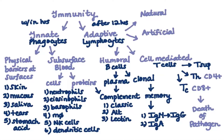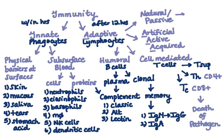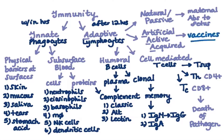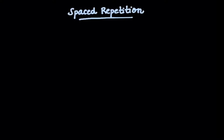Two more types of adaptive immunity: natural or passive, and artificial or active — also known as acquired. A helpful mnemonic uses the four A's together. An example of natural passive immunity is maternal antibodies passed to the fetus, whereas artificial active immunity includes vaccines, which we'll discuss next. First, we'll go to our black screen for spaced repetition to quiz ourselves on concepts covered so far.